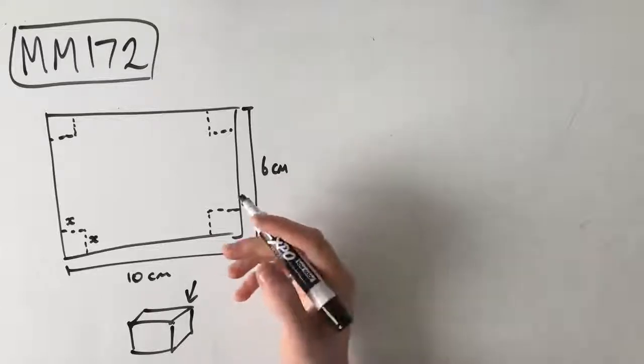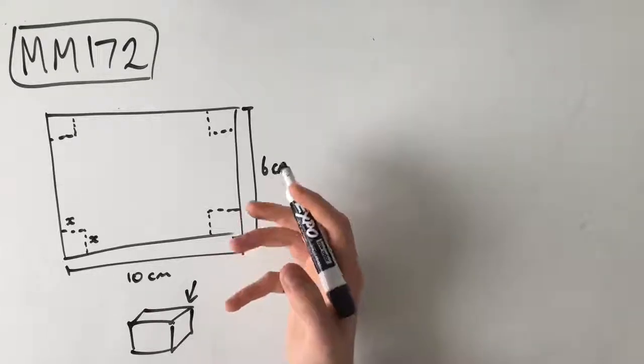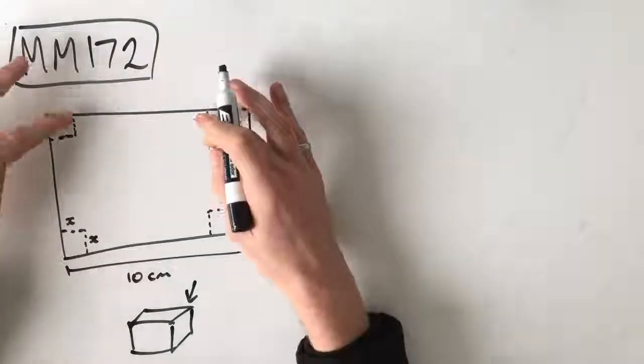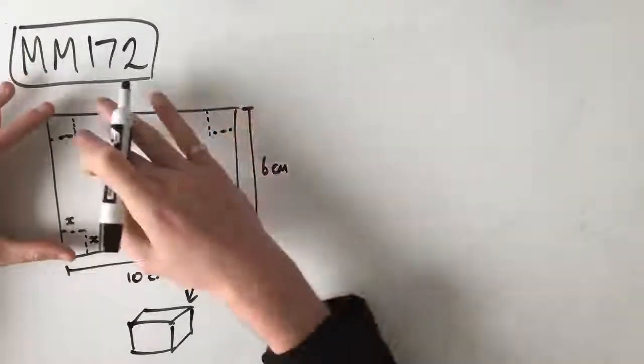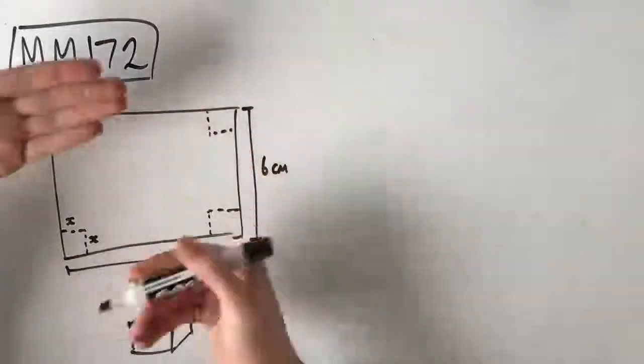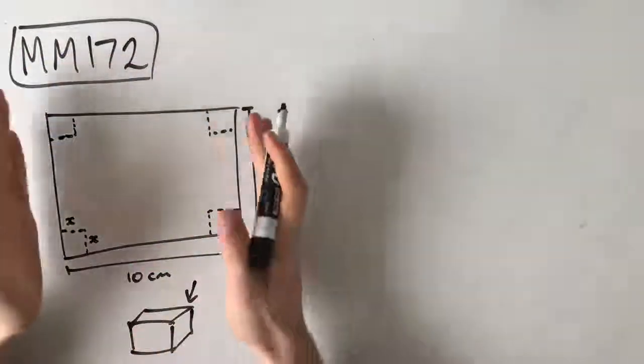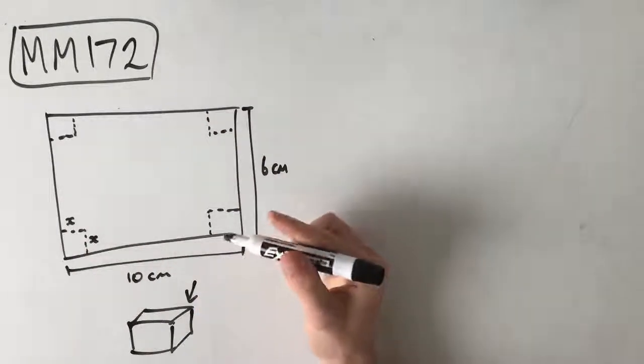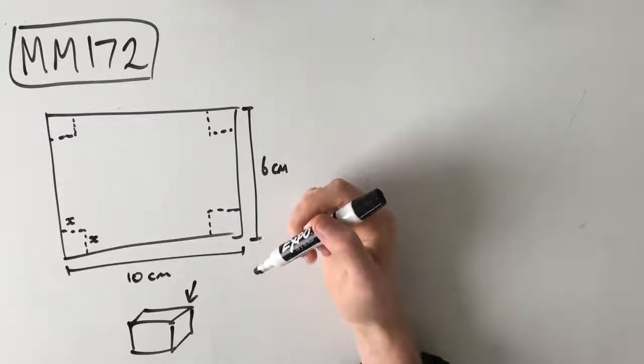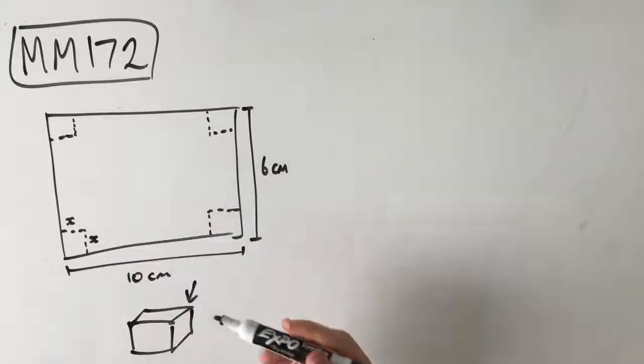He turns up the sides of the box to form an open box. So we're basically cutting these bits out, so that we've got just this shape here, like a cross almost, and we're actually folding the sides up to create an open box. We know that the volume of the box is a maximum, the question tells us, and we need to find the value of x in this case.